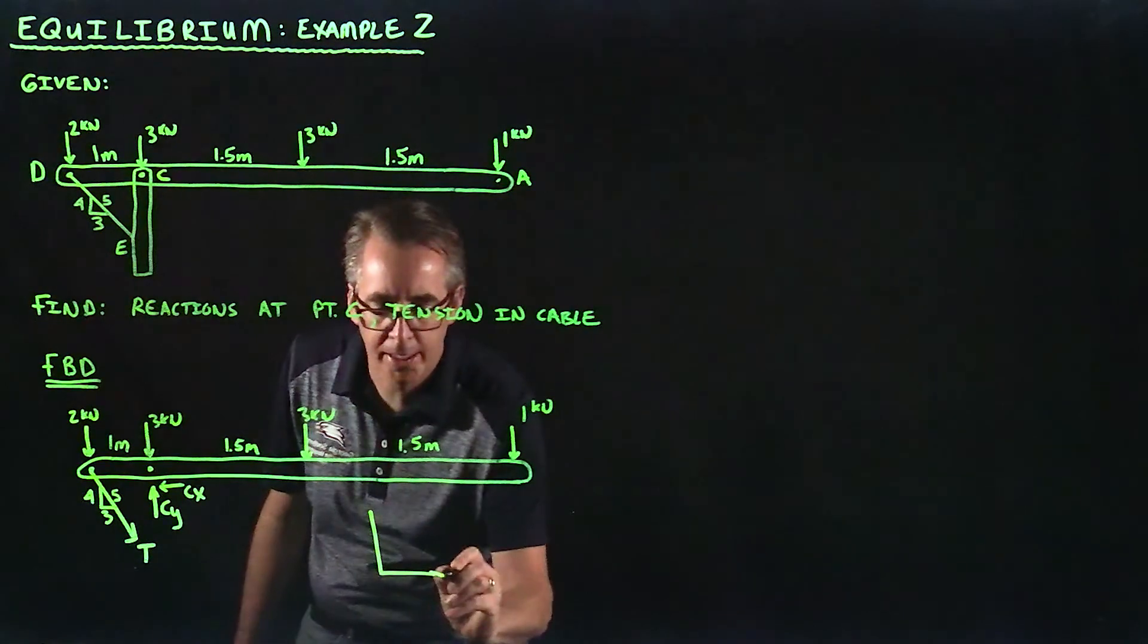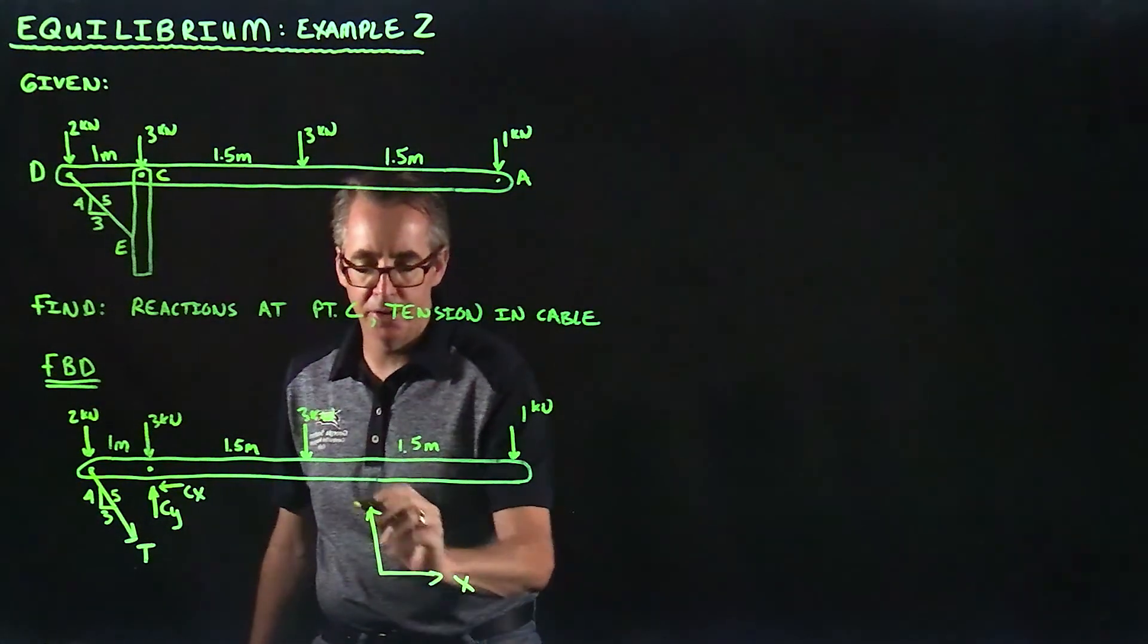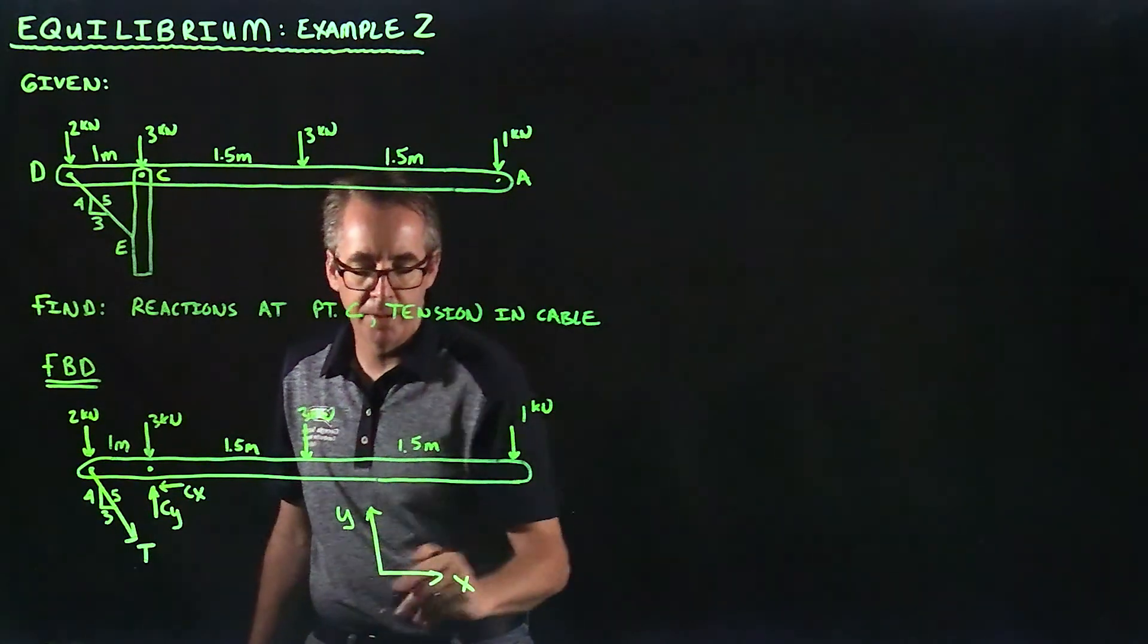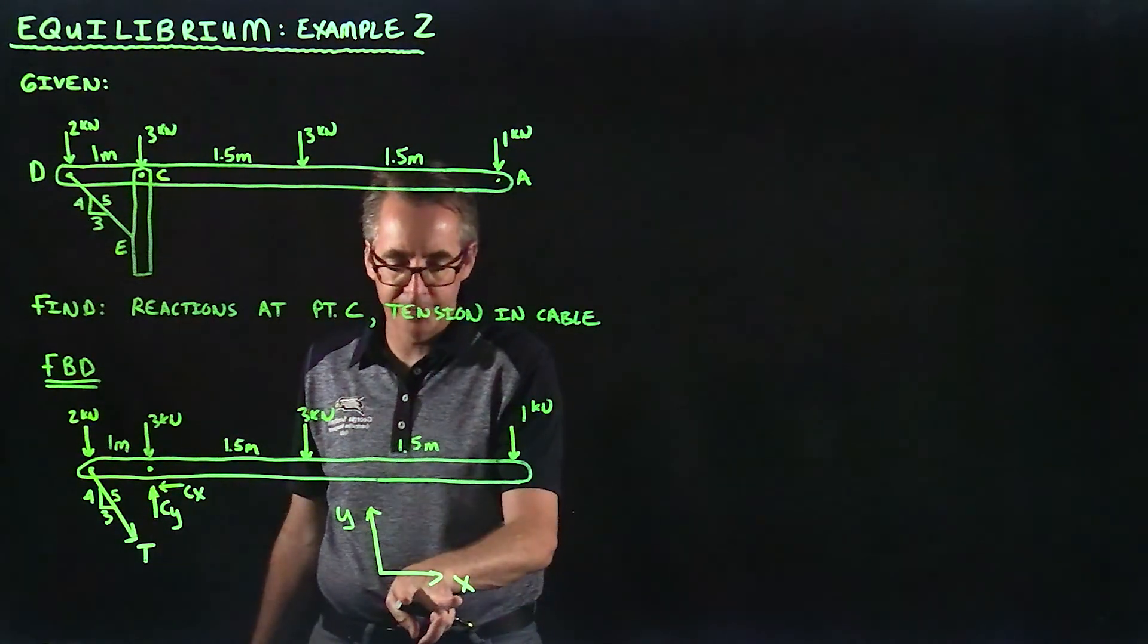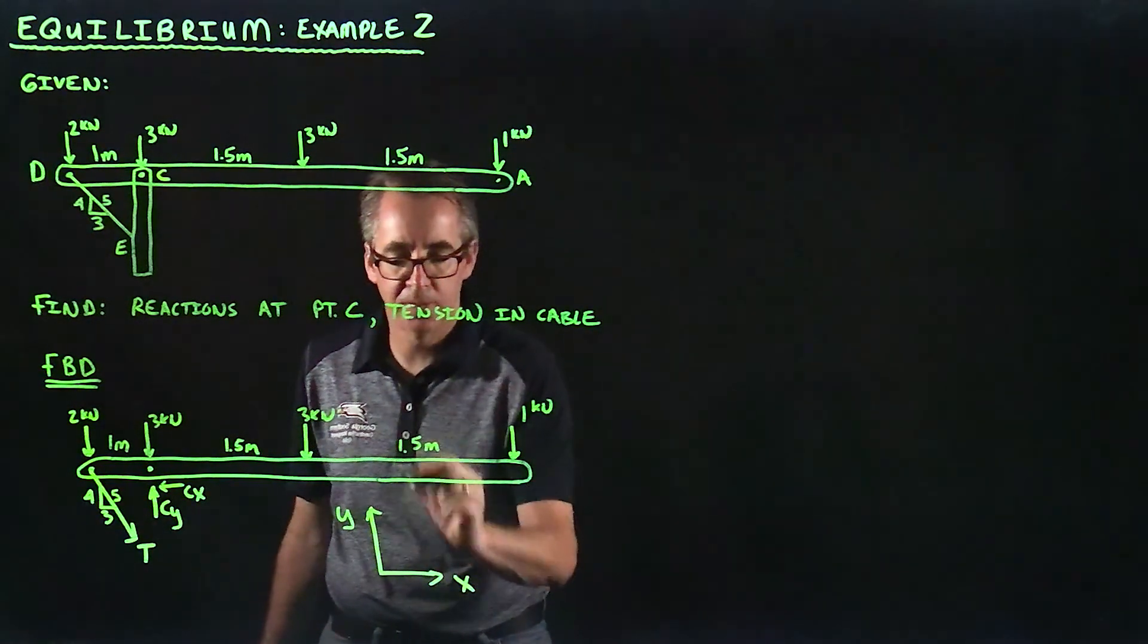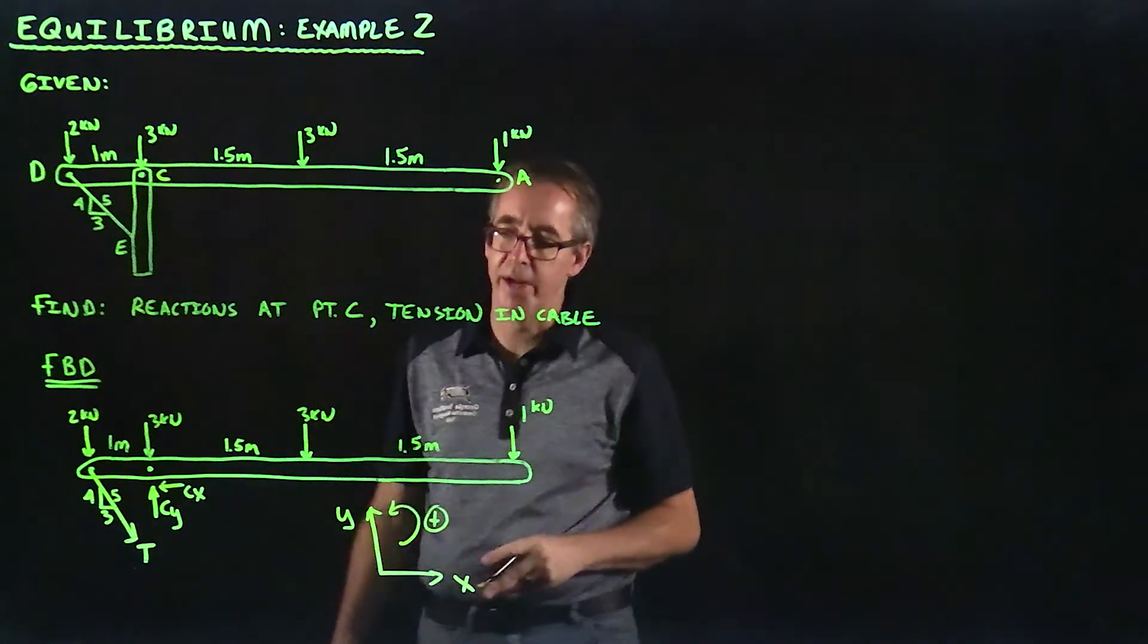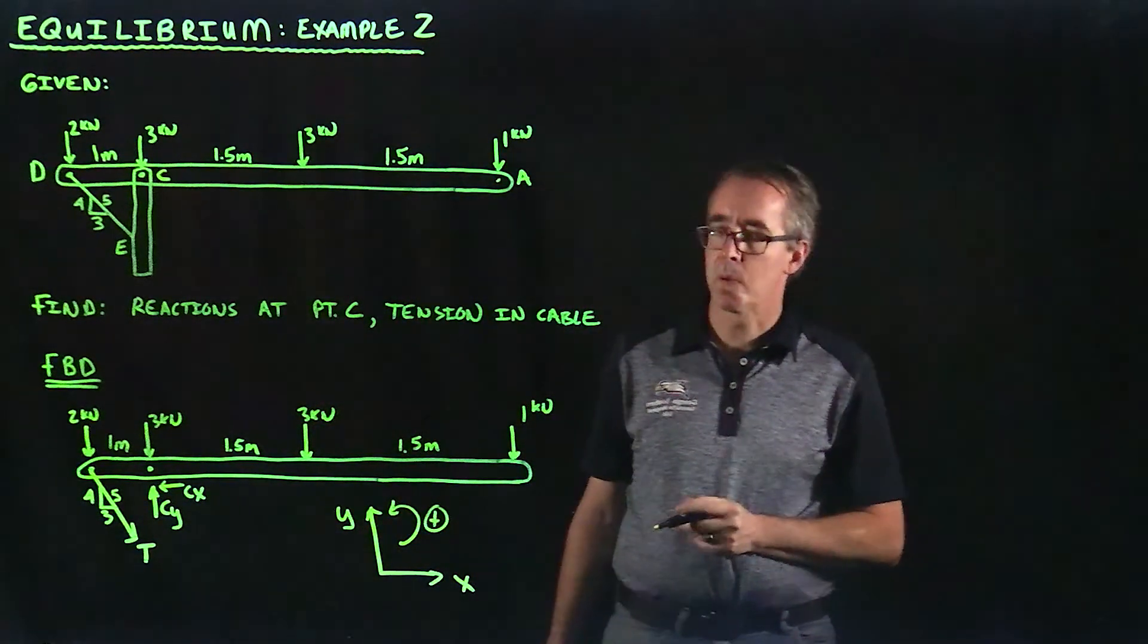The only thing I need that's missing, and you want to include this with all your free body diagrams, is how you're defining positive. My reference axis defines X as positive going to the right, Y is positive going up, and a counterclockwise moment. Those are how we're defining positive.